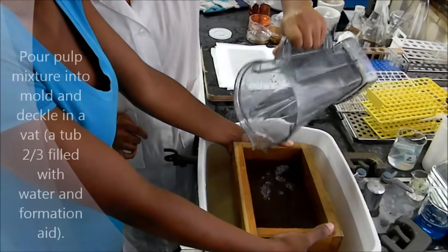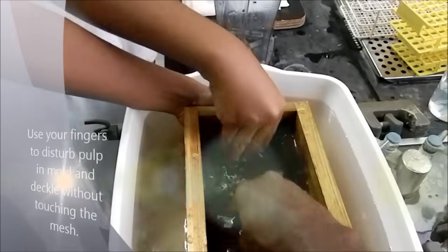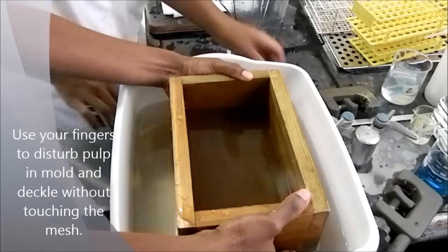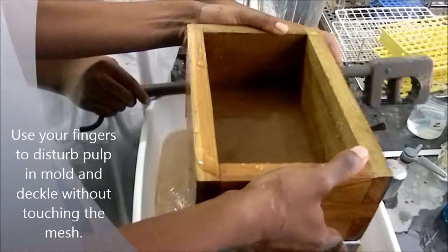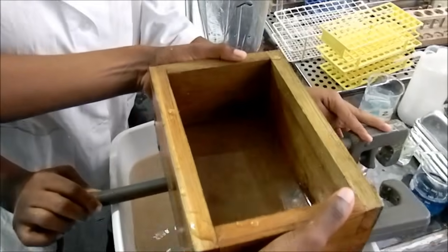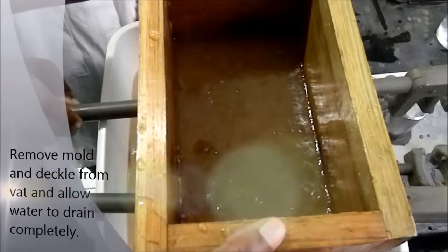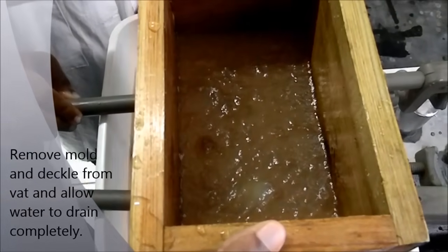And the mold and deckle is used to form the sheet. Wiggle around your fingers to spread out the fiber. And then you pull it out of the water or the vat. And allow the water to drain off.